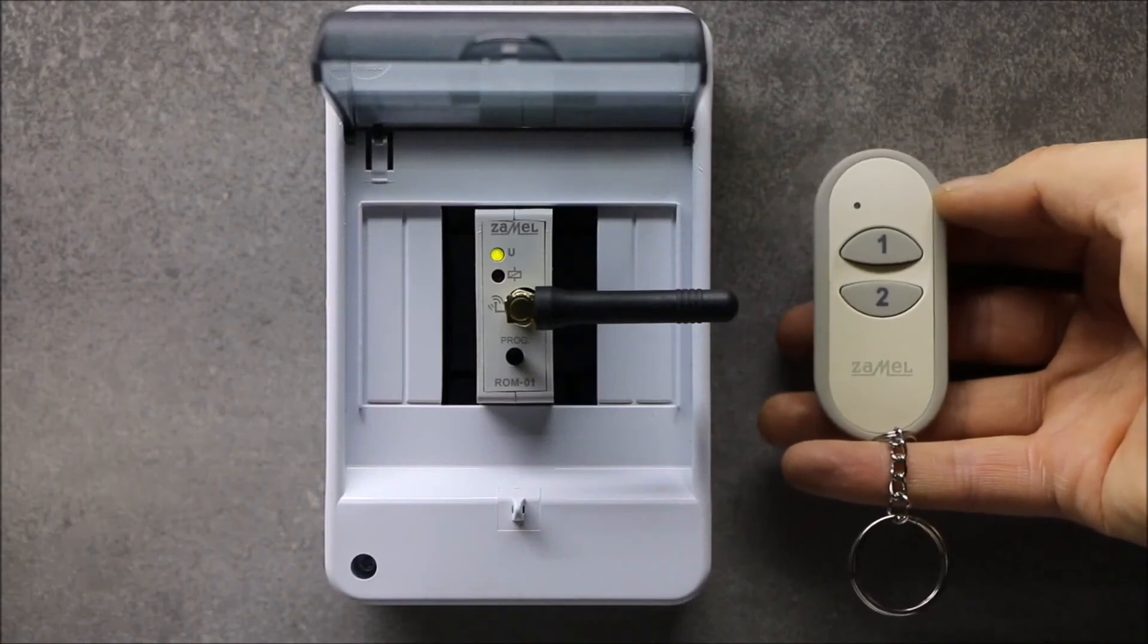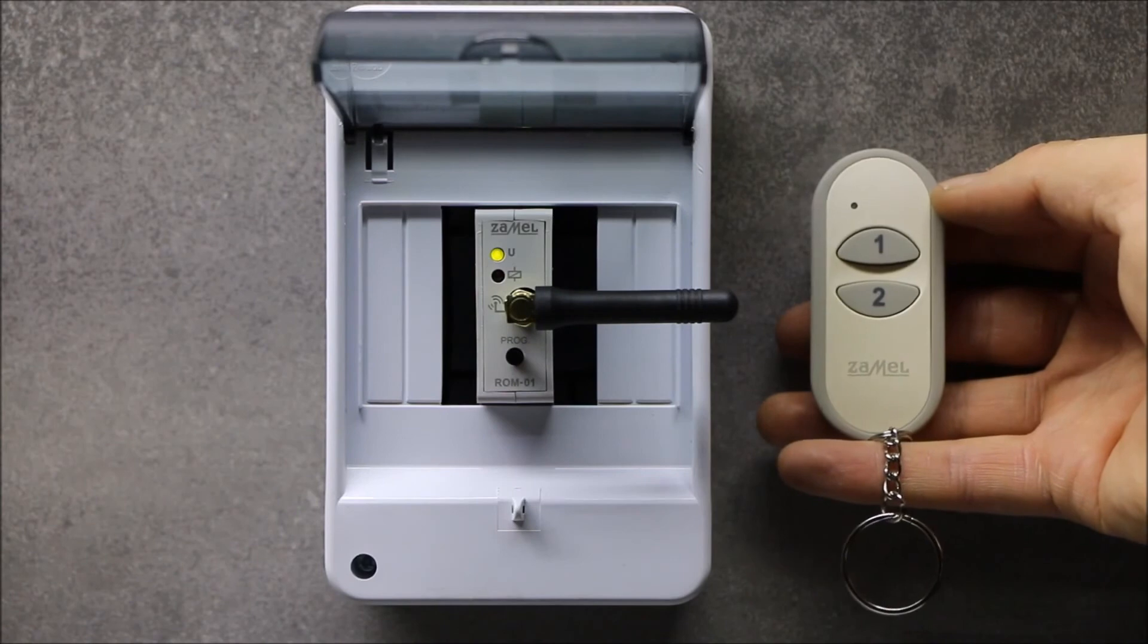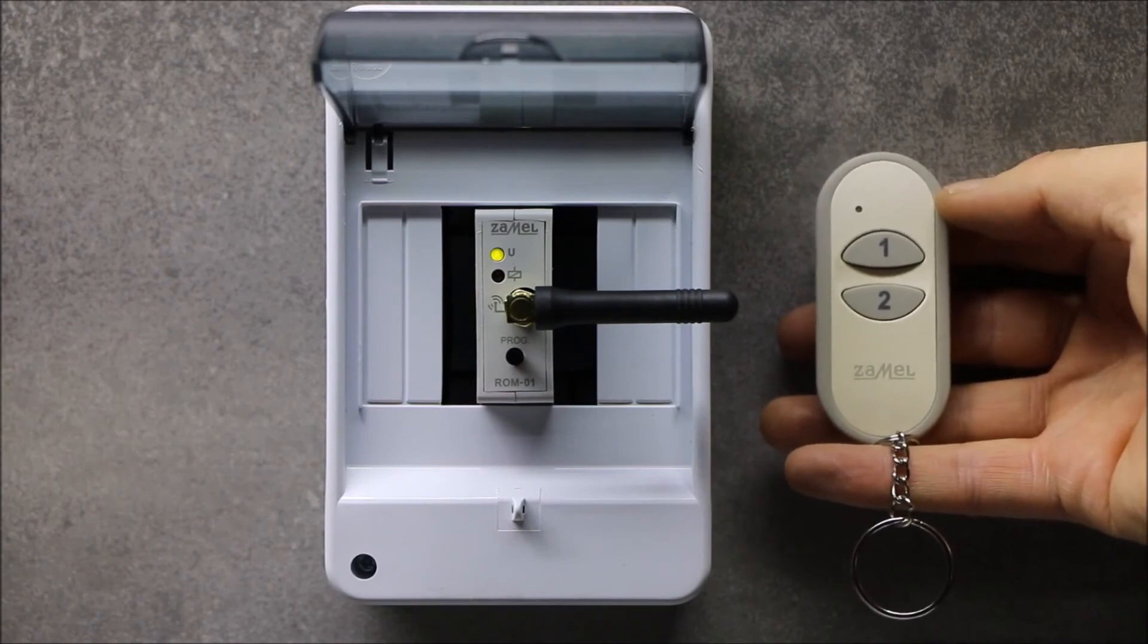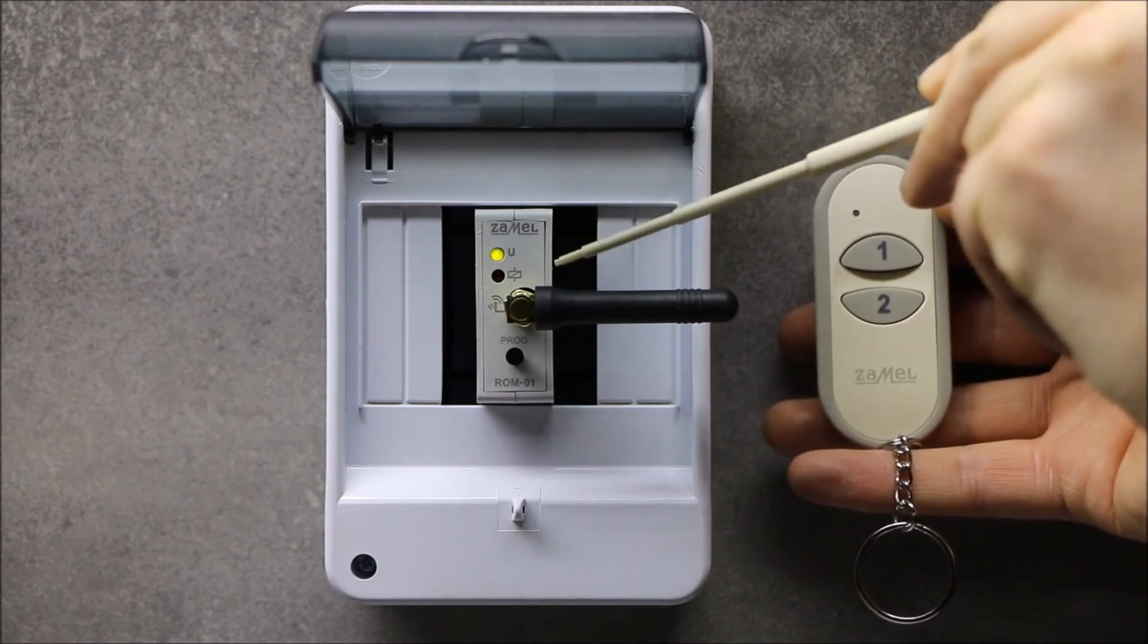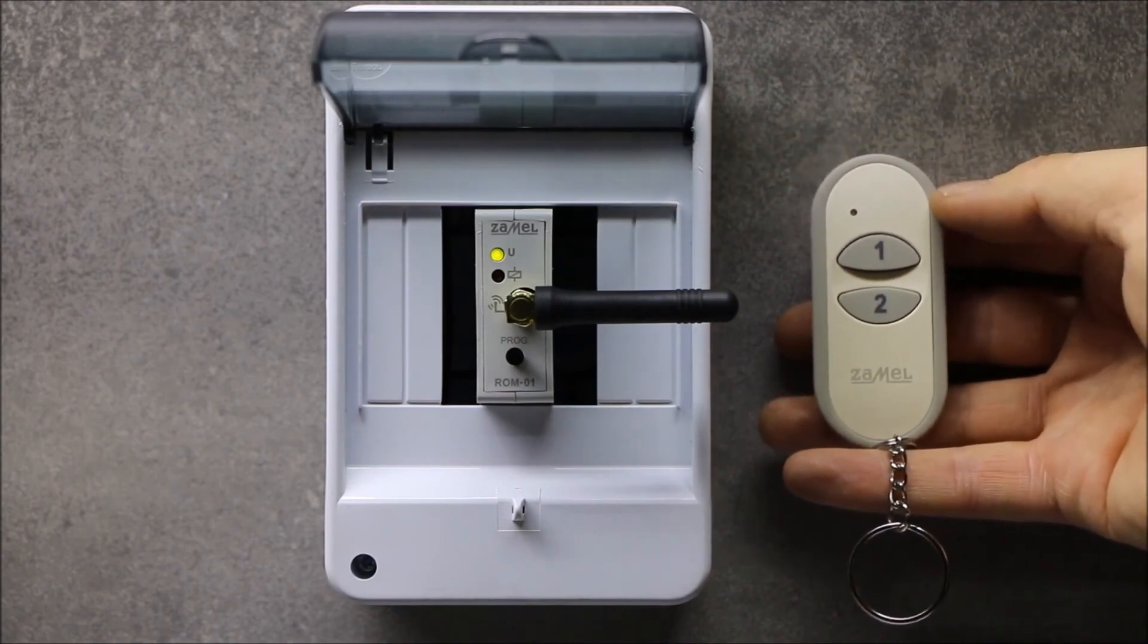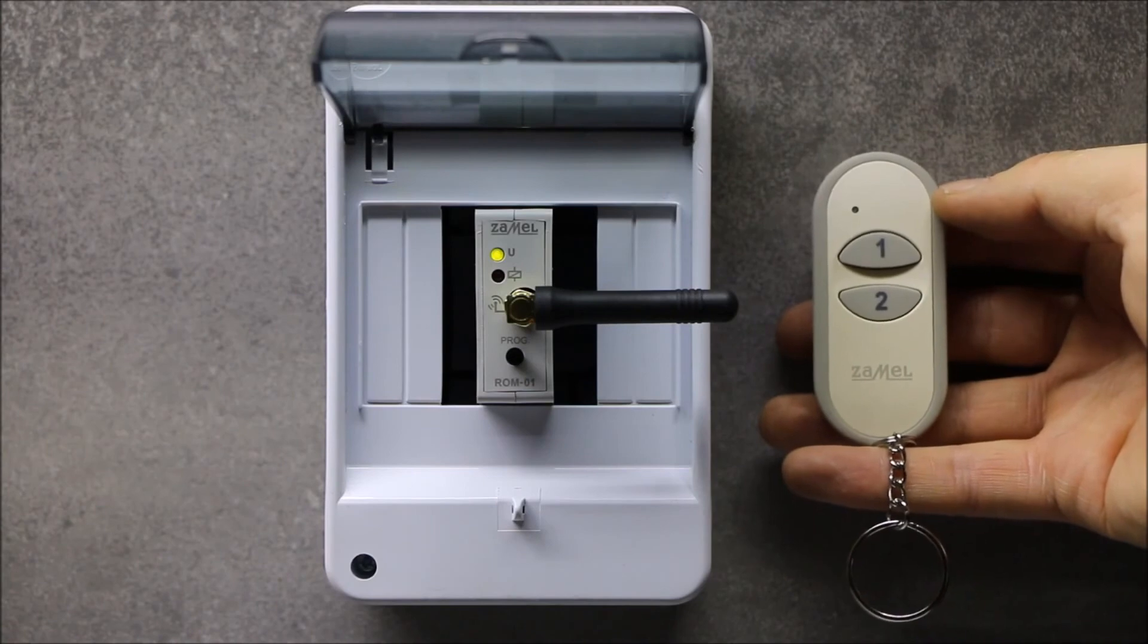Programming procedure for the time mode consists of two steps. Firstly, the selected button should be paired to the given channel in the time mode. Then, the time for that channel should be set in the receiver.